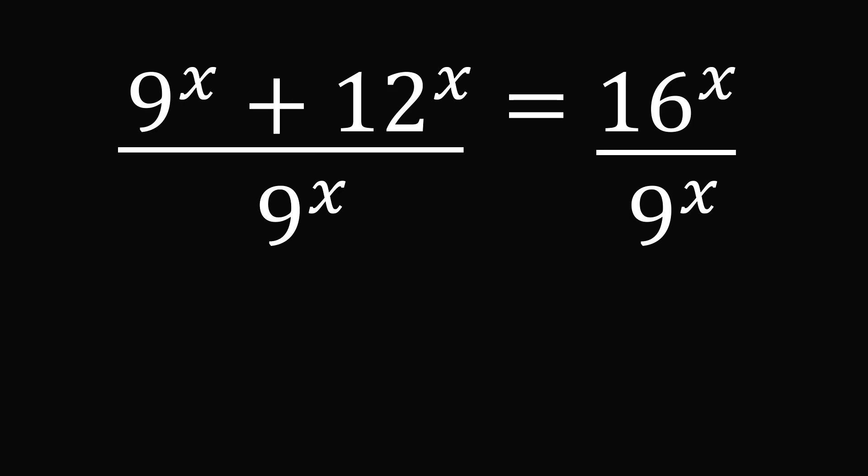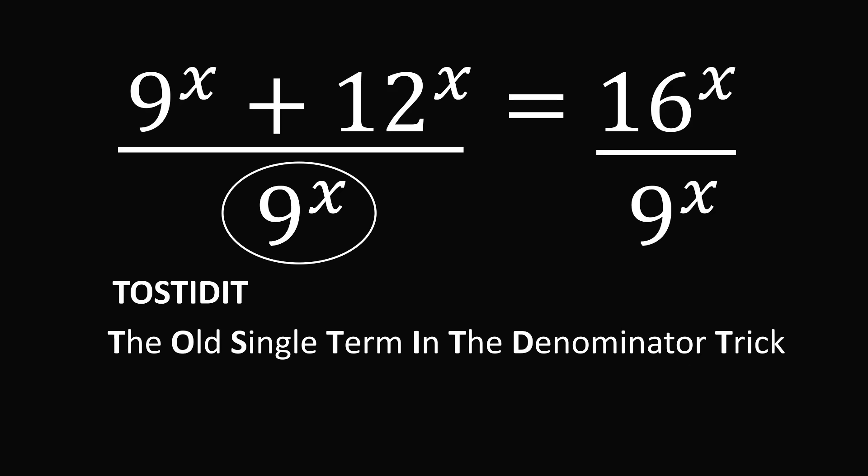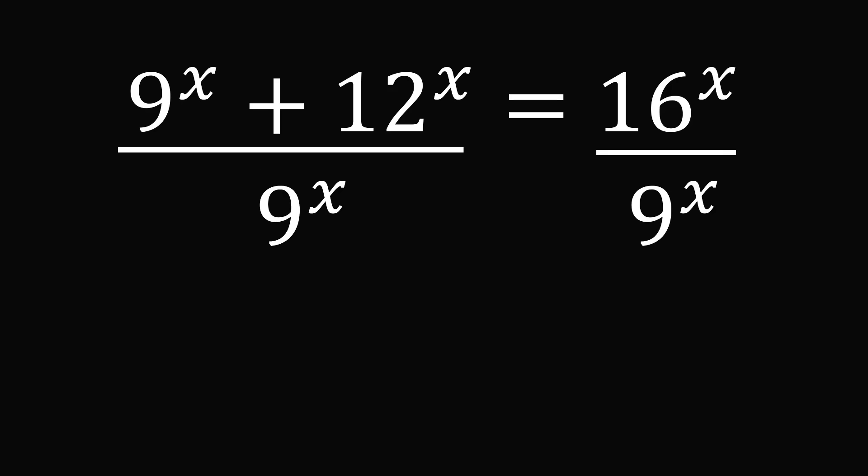On the left-hand side, we have a sum in the numerator and just one term in the denominator. Therefore, we can use TOASTDIT. What is that? My calculus teacher always loved to say this. It stands for the old single term in the denominator trick. So we can split up the numerator and divide both terms by the same denominator. We have 9^x / 9^x + 12^x / 9^x = 16^x / 9^x.